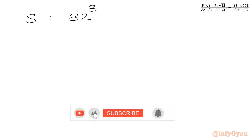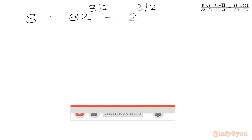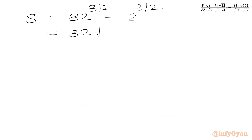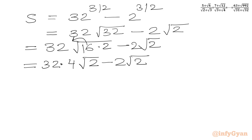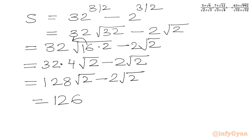So S equals 32^(3/2) minus 2^(3/2), which we write as 32 times square root 32 minus 2 times square root 2. Since square root of 32 is square root of 16 times 2, which equals 4 root 2, we get 32 times 4 root 2 minus 2 root 2, giving 128 root 2 minus 2 root 2, which equals 126 root 2. This is our required sum S.